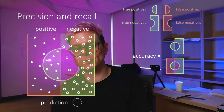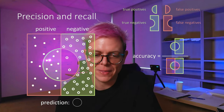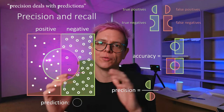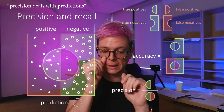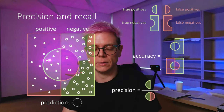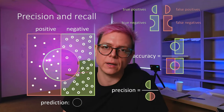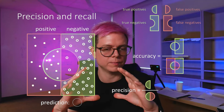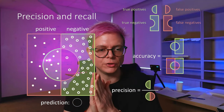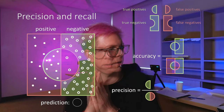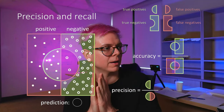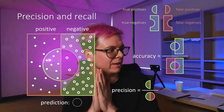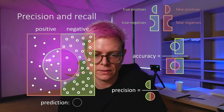Therefore we have to introduce new metrics. The first one is called precision. Precision is the fraction of my predictions that are actually correct. In pictures, it's going to be the green semi-circle divided by the entirety of the circle. What is my precision in this case? 80%. That's good.